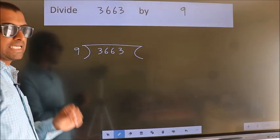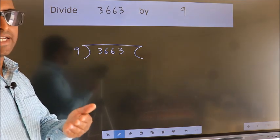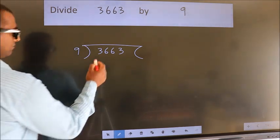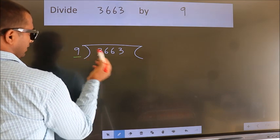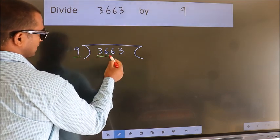This is your step one. Next, here we have 3, here 9. Three is smaller than nine, so we should take two numbers, 36.